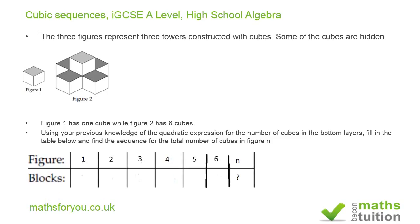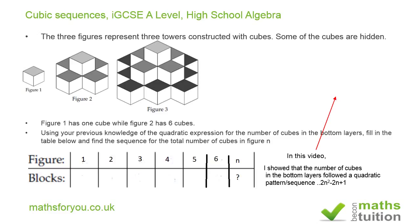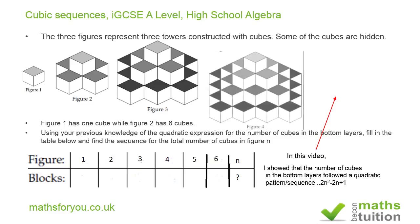Here is the table. From the previous video, the formula to find the number of cubes in the bottom layer of figure n is 2n² minus 2n plus 1. Here is figure three, and I've also included figure four just to help out.